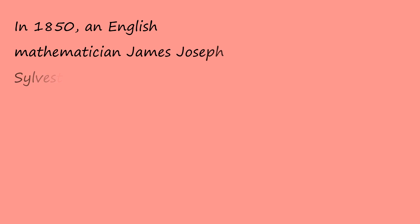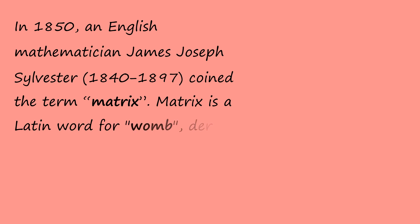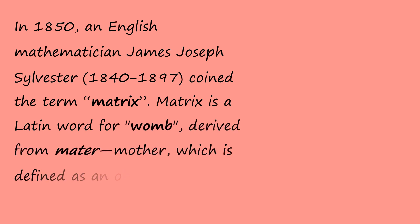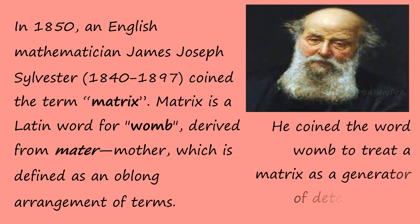In 1850, an English mathematician James Sylvester coined the term matrix. Matrix is a Latin word for womb, derived from mater, meaning mother, which is defined as an oblong arrangement of terms. He coined the word womb to treat a matrix as a generator of determinants.